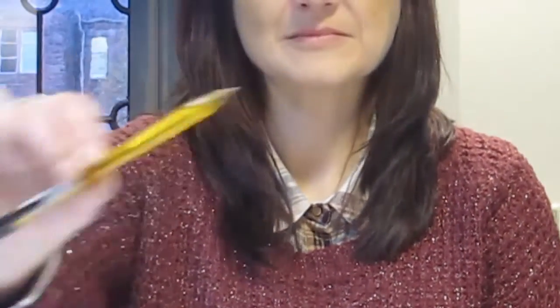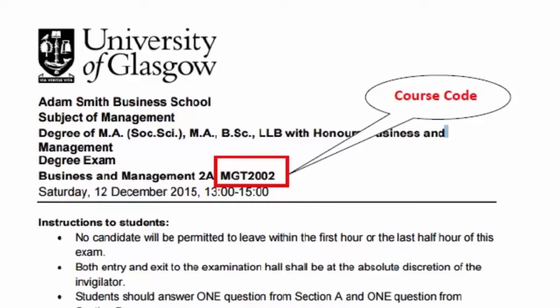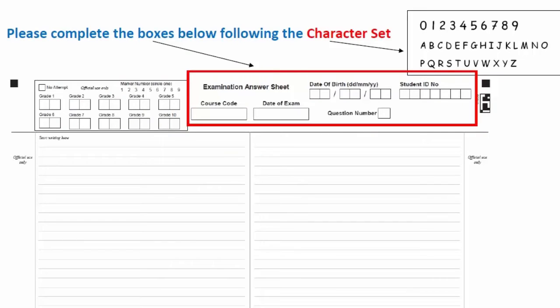Remind students to use a black ballpoint pen. Ask students to complete their course code, date of the exam, student number and date of birth on each white sheet before they begin the exam. Students have been provided with a standard character set on the first page of their exam paper on how to write this information.